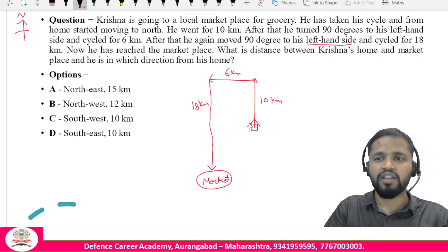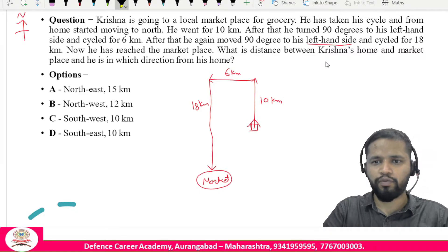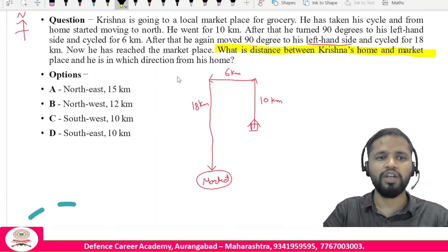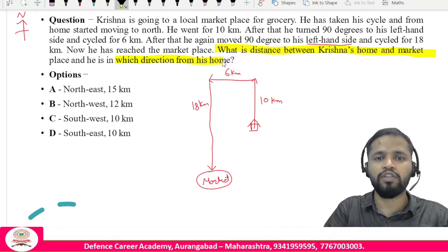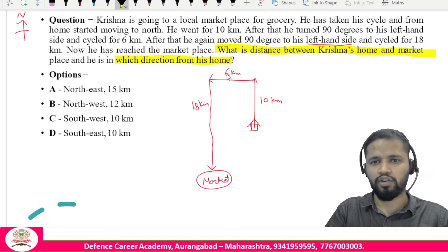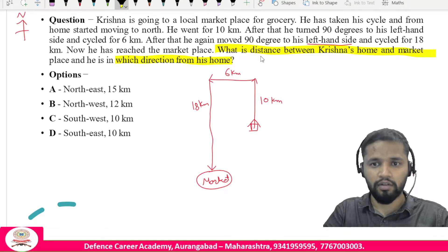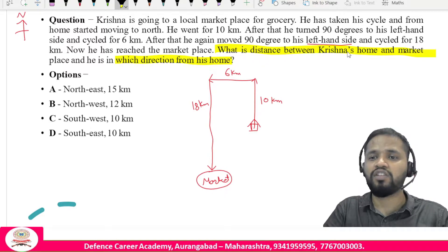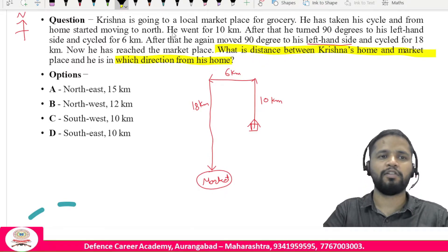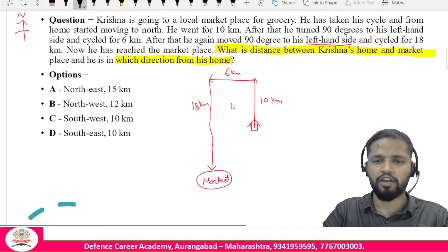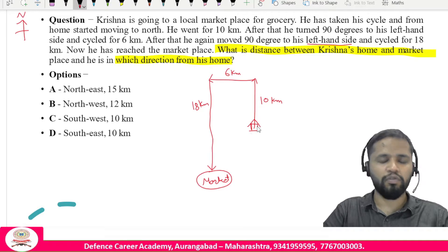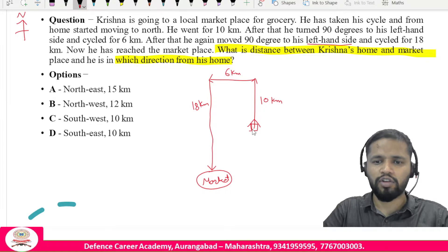Two questions are asked: first, what is the shortest distance between Krishna's home and the marketplace? Second, in which direction is the marketplace from his home? We need to find the shortest distance, so we identify the right-angle triangle formed by the path.